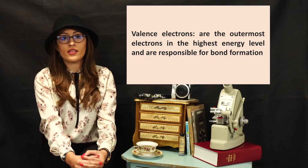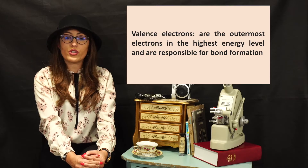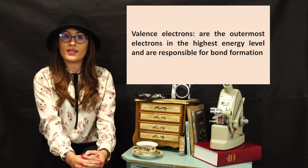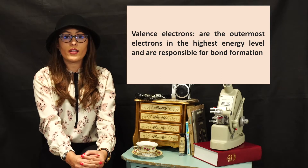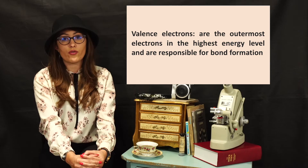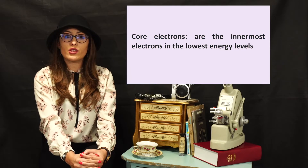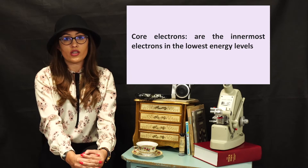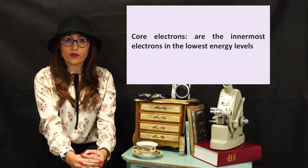The electrons in the highest energy level contain the outermost electrons, which are known as the valence electrons. Valence electrons are going to be important when we start talking about the formation of bonds and why things react. The electrons in the lowest energy levels are known as your core electrons.